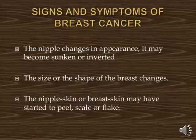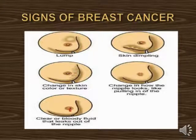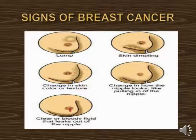Looking at images, the first picture shows swelling around the breast area. The second shows a change in skin color or texture in the breast. The third image shows clear or bloody fluid leaking from the nipples. Other visible signs include skin dimpling and changes in how the nipple looks, such as pulling inward.